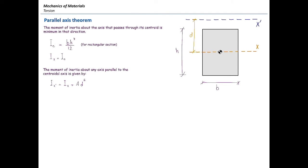The parallel axis theorem states that the moment of inertia is minimum about the centroid of the section, shown as I sub C. If we want the moment of inertia about any other axis, we add an extra term: area multiplied by distance squared. For example, for a rectangle, the moment of inertia about its centroid is BH³/12. For any parallel axis like x-prime above, we add the area of the rectangle multiplied by the squared distance D between the two axes.